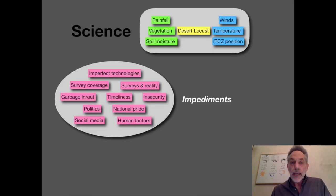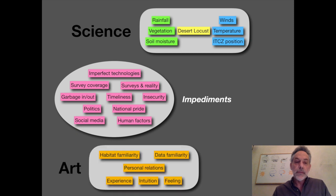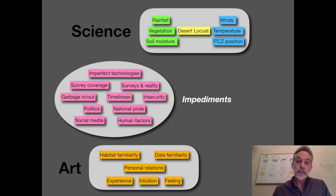So that's the science and those are the impediments — meaning there are serious gaps that we have to deal with. And we deal with that in what I would submit as art: the art of forecasting. This entails a familiarity with habitat, data, and people, and it involves experience, intuition, and feelings. It might sound a bit strange, but let me try to explain.